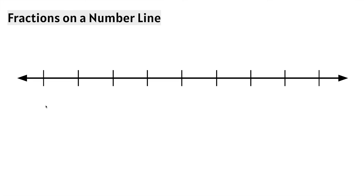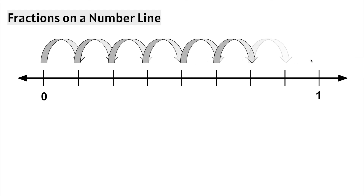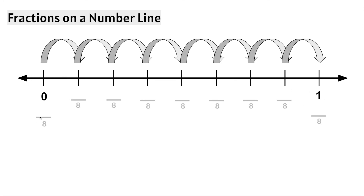Let's try one more. This number line still has the whole numbers 0 and 1. We need to figure out how many equal sections there are between the 0 and the 1. Let's count: 1, 2, 3, 4, 5, 6, 7, 8. There are 8 equal sections between the 0 and the 1.